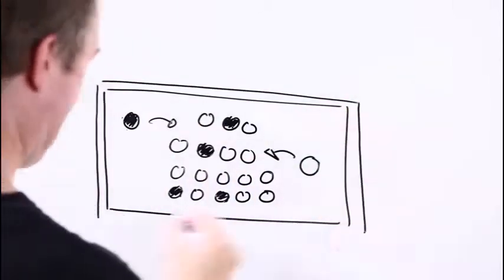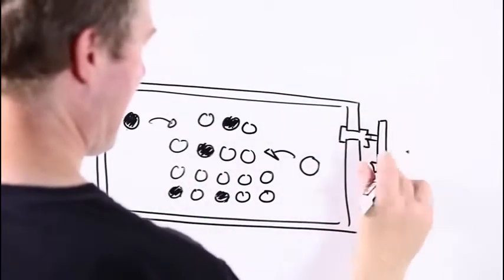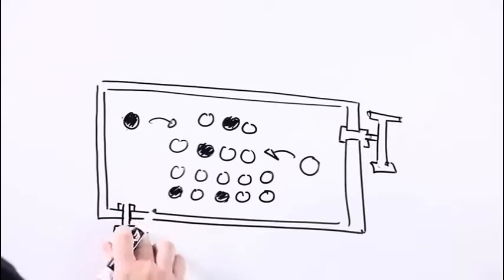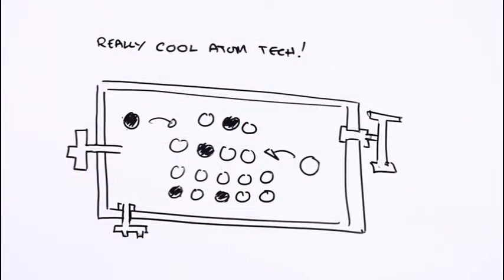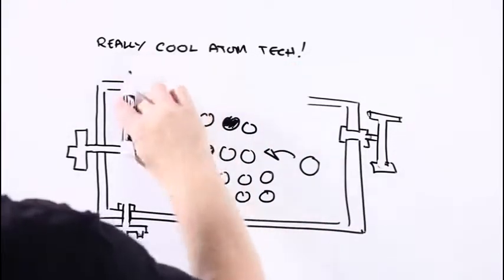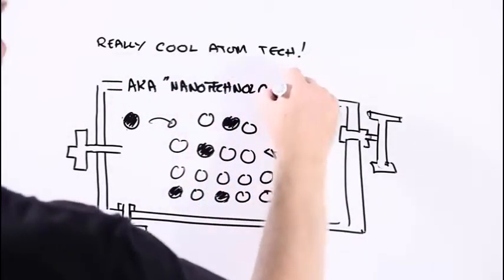scientists and engineers have become increasingly good at designing and engineering materials down at the level of atoms or small groups of atoms. And because this new technology involved doing stuff at such a minute scale, it's called nanotechnology.